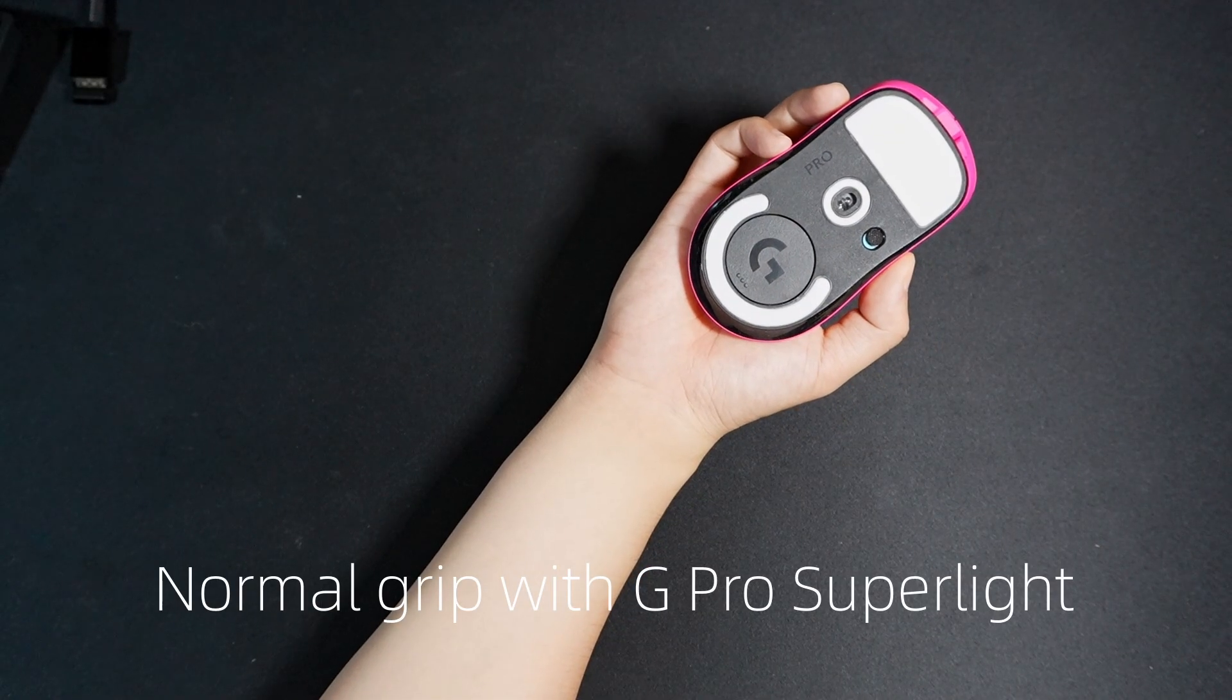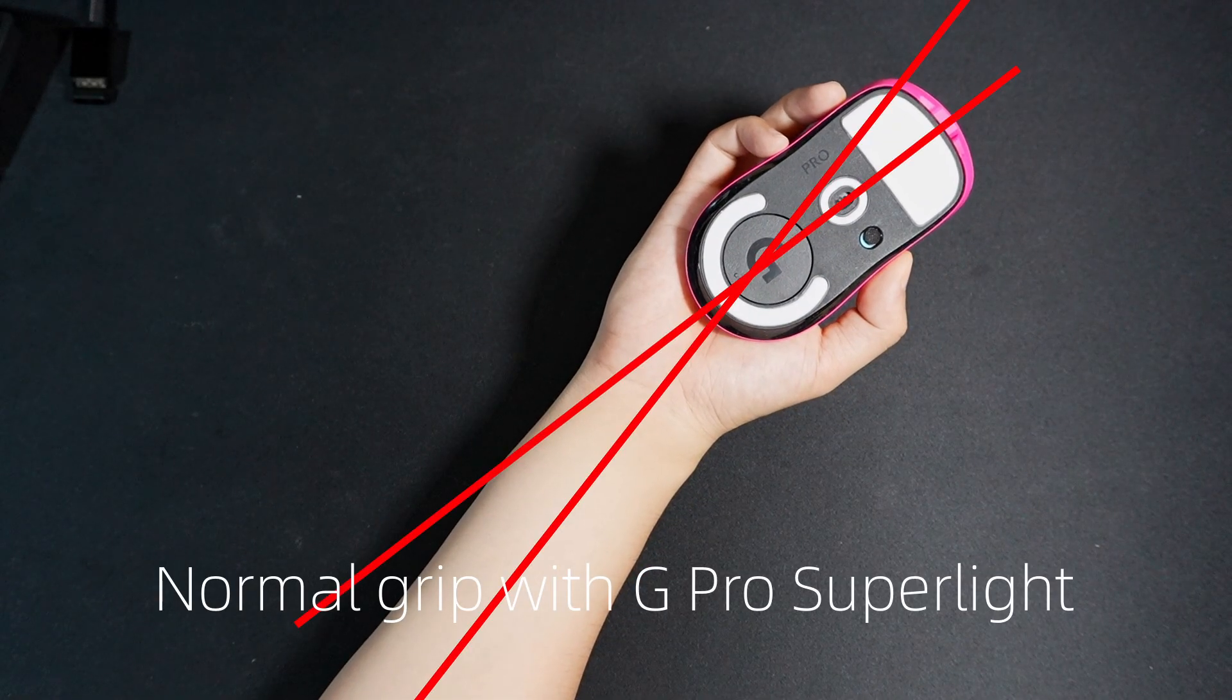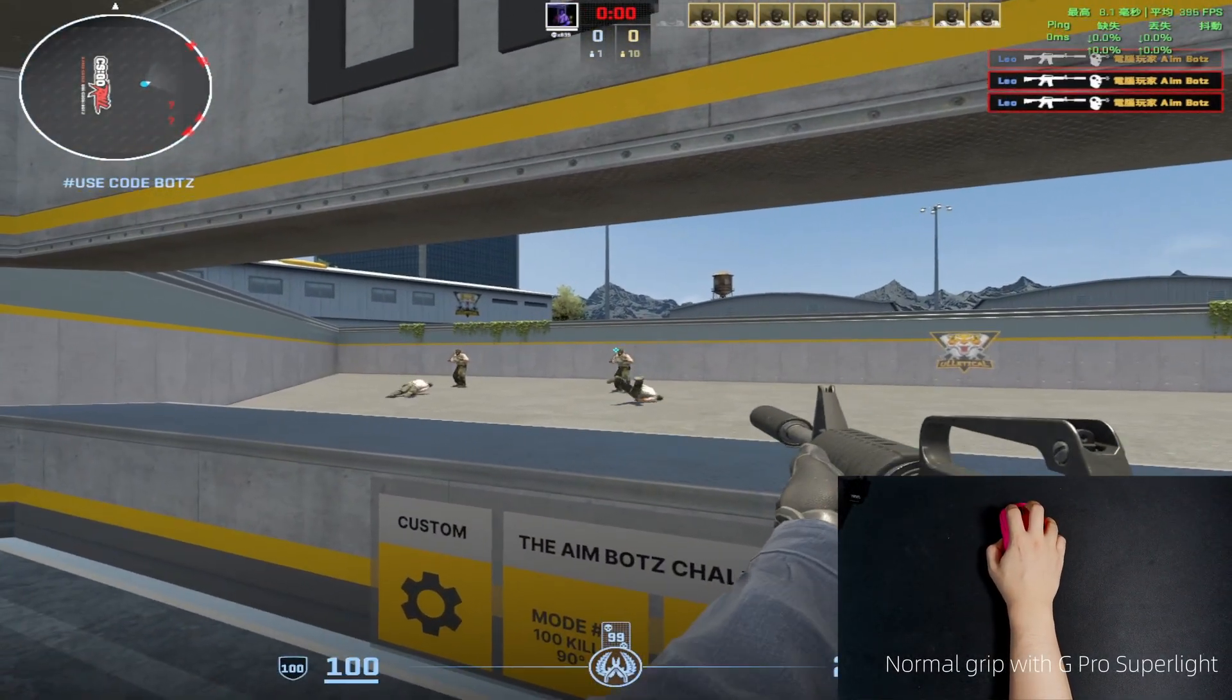But with my normal grip, the sensor isn't aligned with my arm. The computer thinks that I'm moving diagonally. I have to keep adjusting the crosshair position.